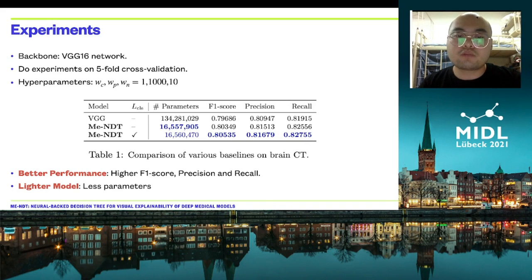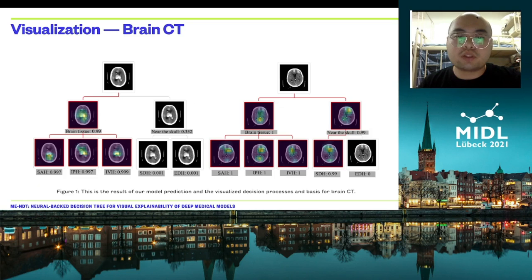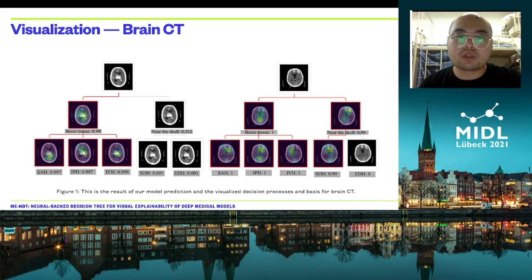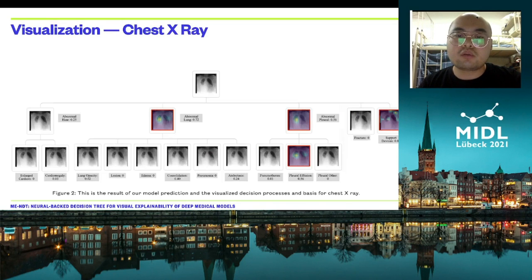Here we display some results to demonstrate MENDT. We show the diagnosis report for chest CT; we observe that in all cases MENDT accurately indicates the area of interest and correctly predicts the disease. Here we also observe the results of MENDT for chest X-ray, where again the decision path is correctly highlighted.